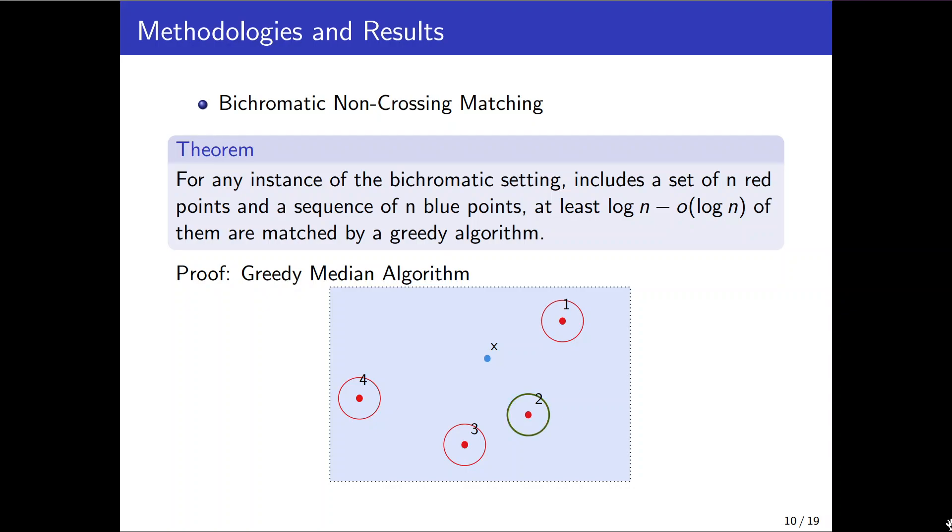Then the algorithm decides to match x to the median of list which is point 2 here. In the worst case the provided line segments bisects the red points after creating a matching. So the number of future match points decreases by a factor of 2. Then when a new point y appears the list is updated and again the algorithm selects the median one to match with. And at the end at least (n-1)/2 blue points are matched by the greedy median algorithm.